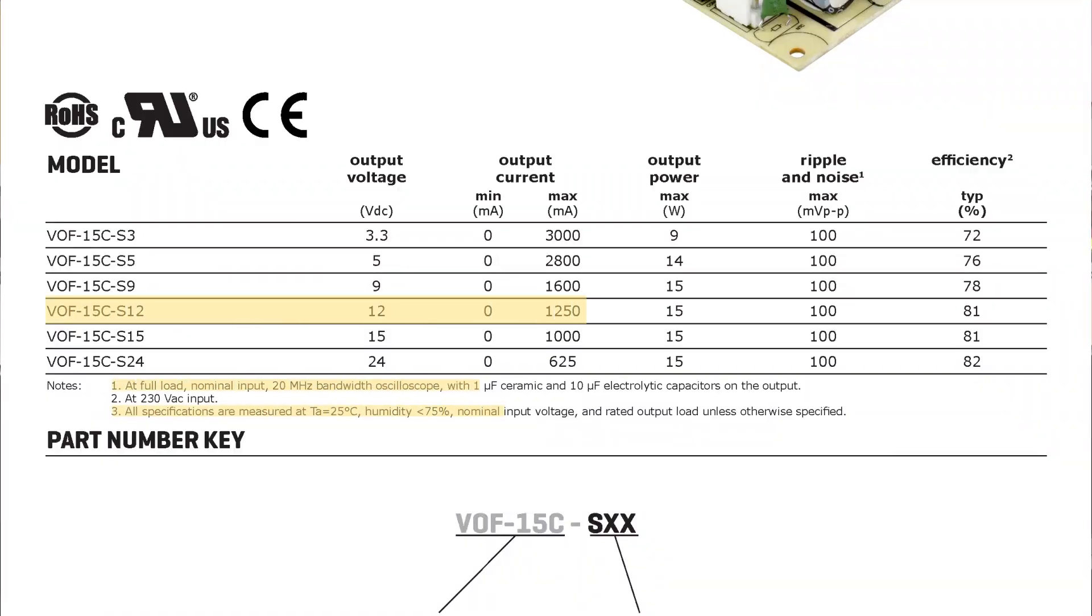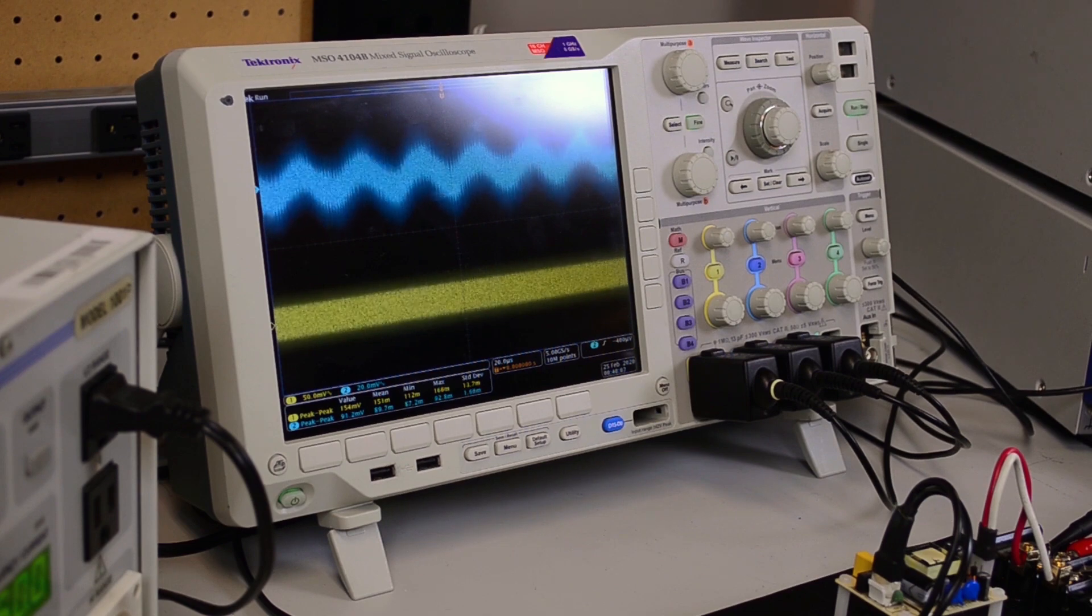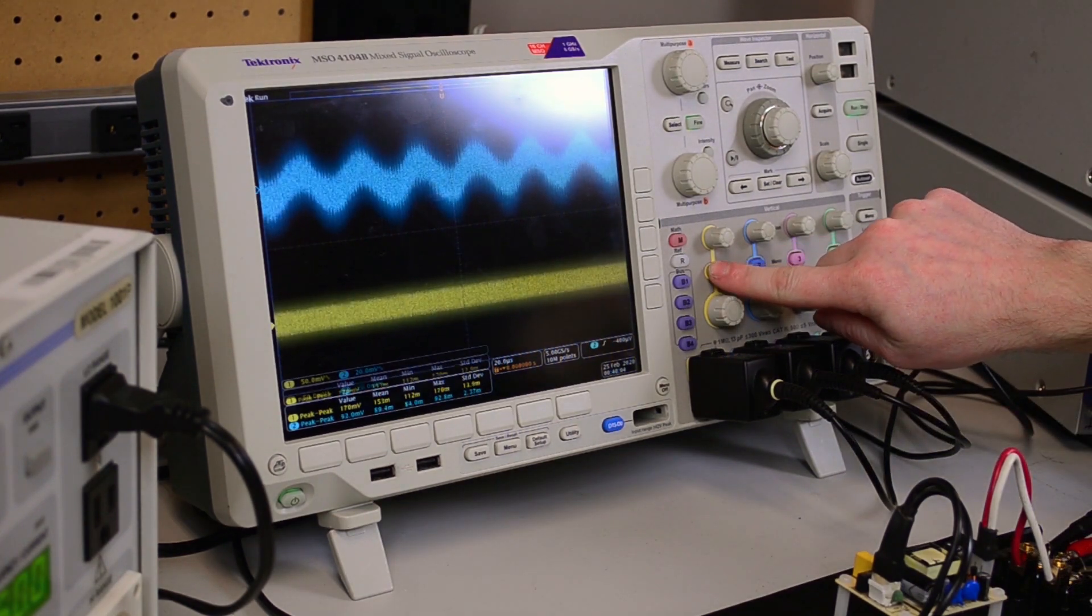Before we perform this measurement, we need to take a look at the datasheet and see what conditions are specified for this test. Now we'll set up the scope and apply the 20 megahertz bandwidth limit.